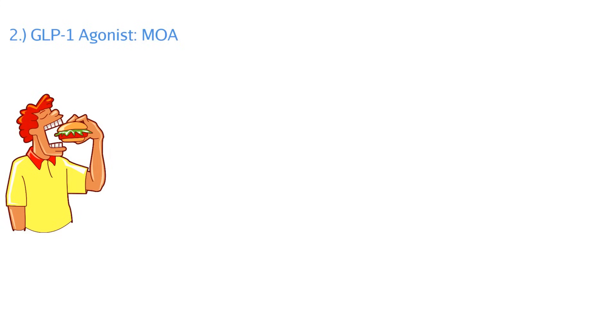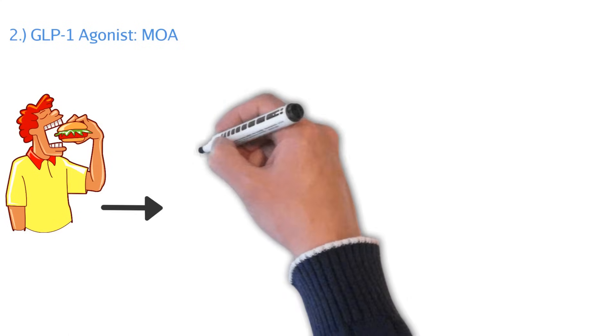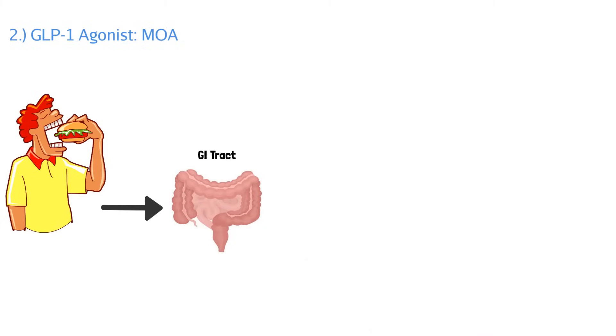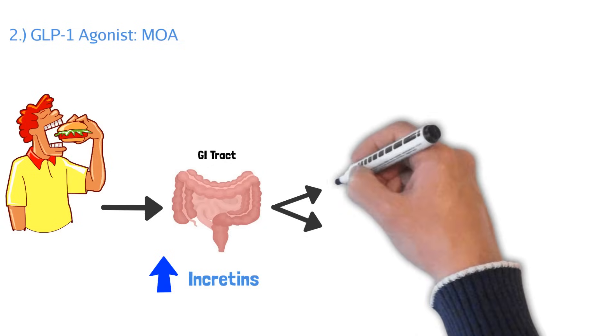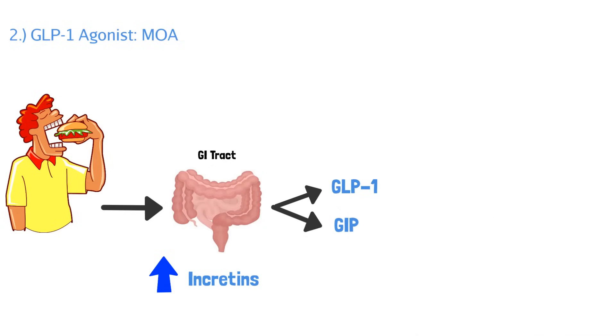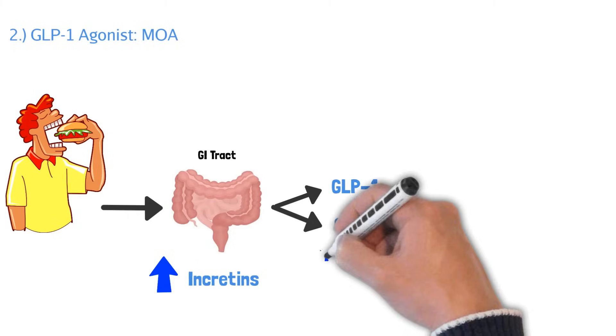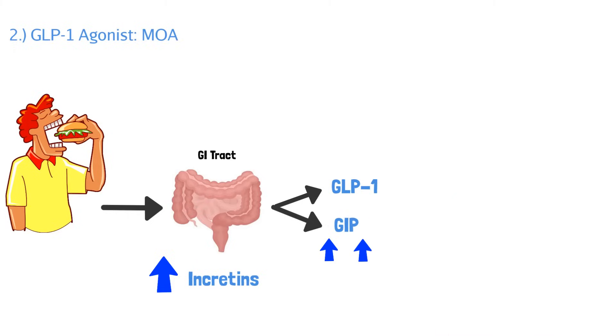So here if you have a person that's eating a hamburger, what happens is that burger, the food, travels down your digestive system and eventually it'll go to your GI tract and that burger is going to cause your body to release these things called incretins. There's two we're going to focus on and the first one you could have guessed is GLP-1 and then we have GIP. So these incretins cause various things to happen throughout the body. When you eat, you have an increased level of GLP-1 and GIP.